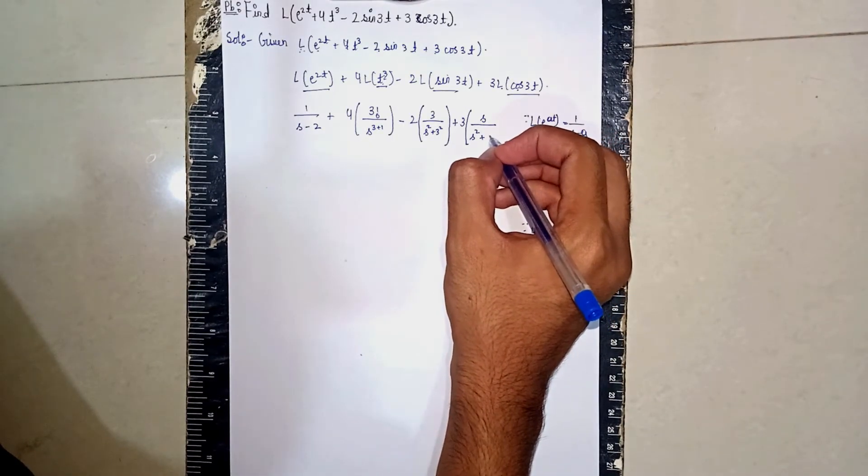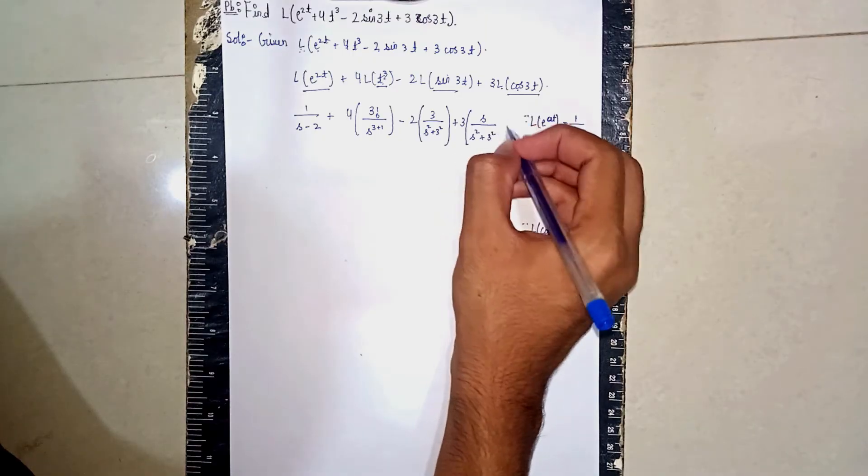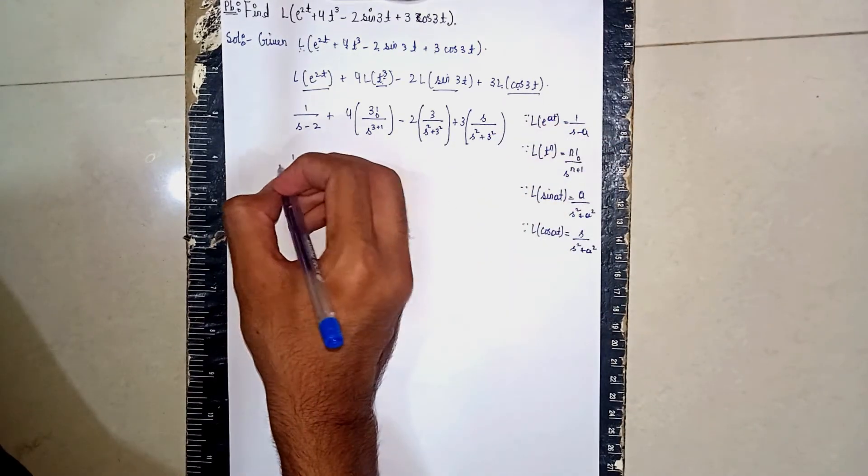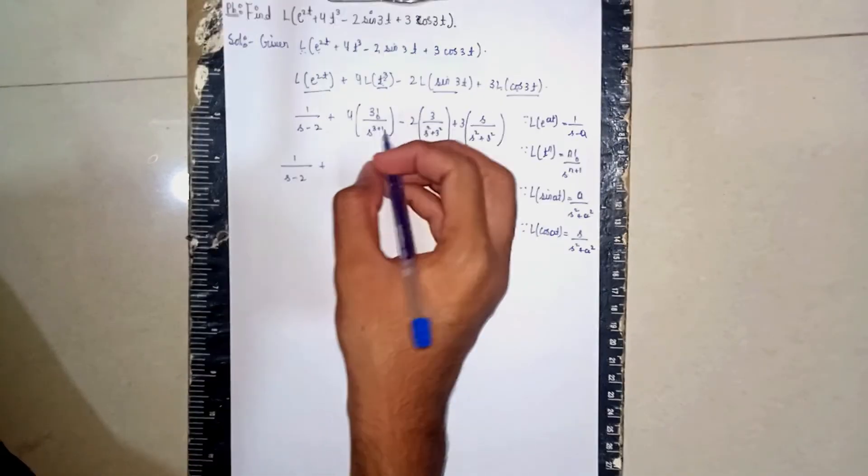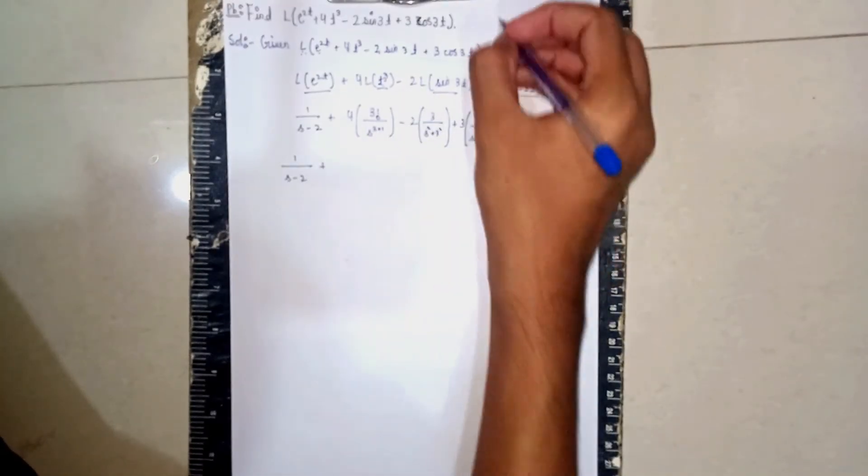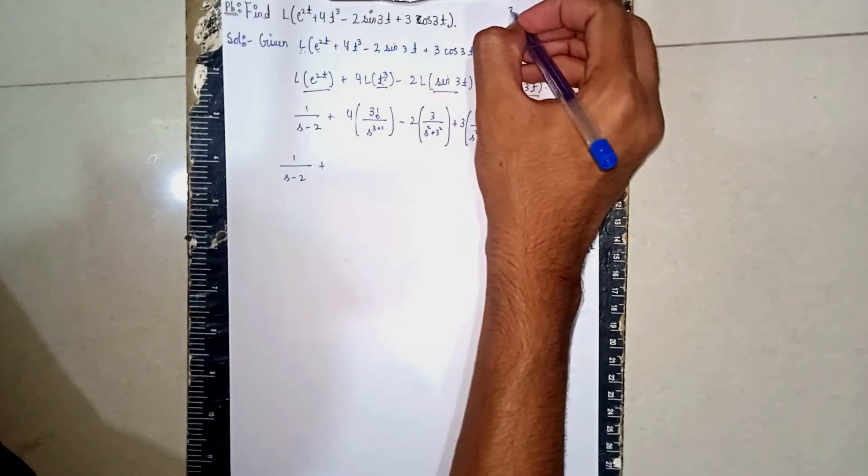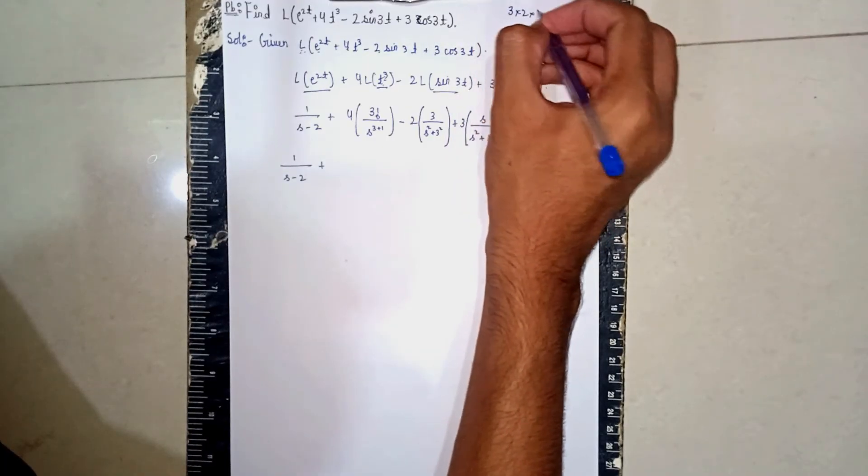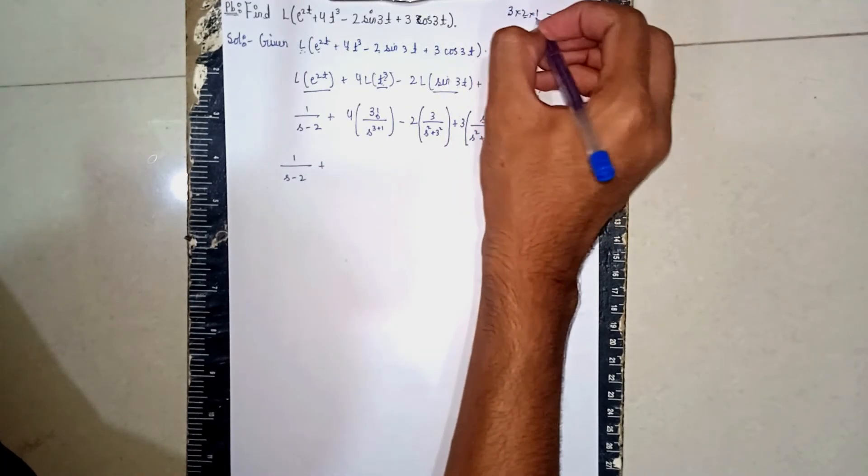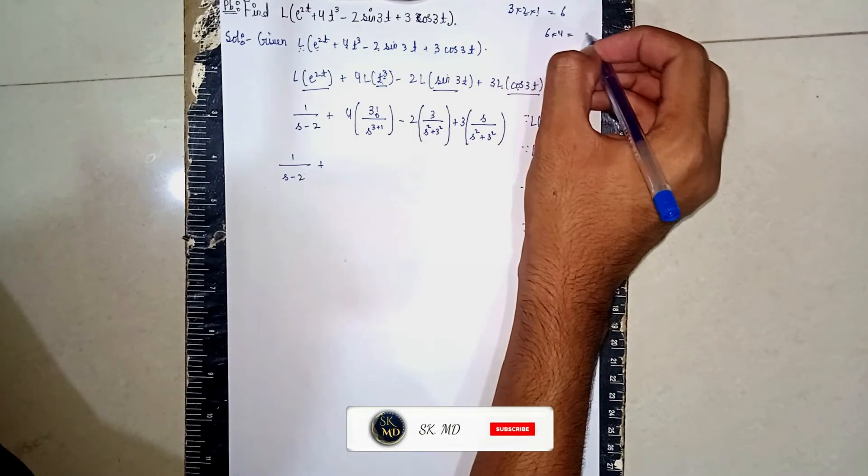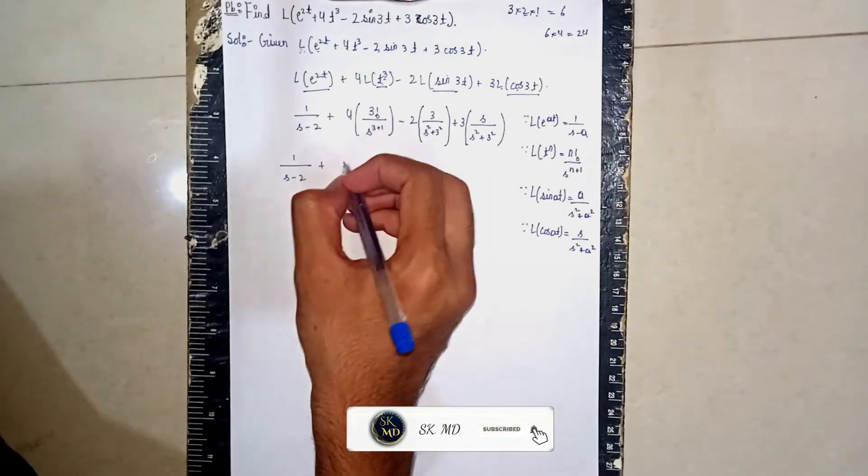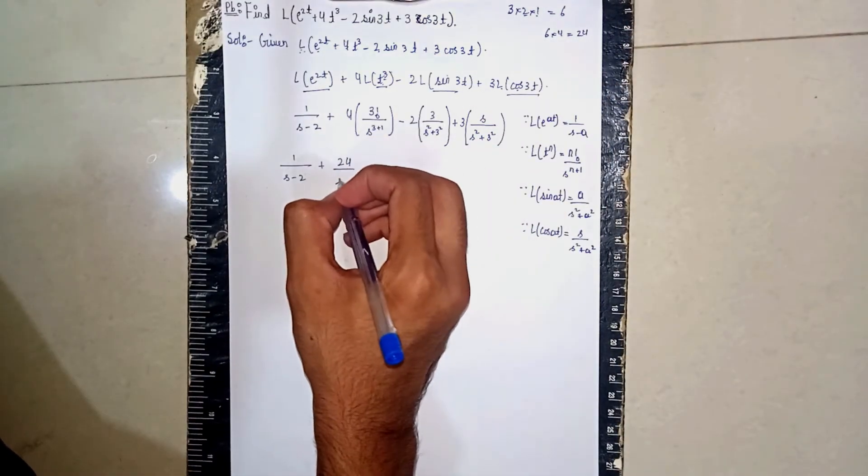Now 1/(s-2), then 4. Now 3 factorial means reverse multiply: 3×2×1, so you get 3×2 = 6, 6×1 = 6. Now 6×4 = 24, so 24/s^4.